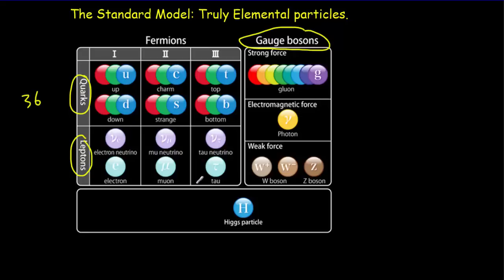The leptons come in six different varieties, and each one of those has an antiparticle. So you've really got 12 different types of leptons.